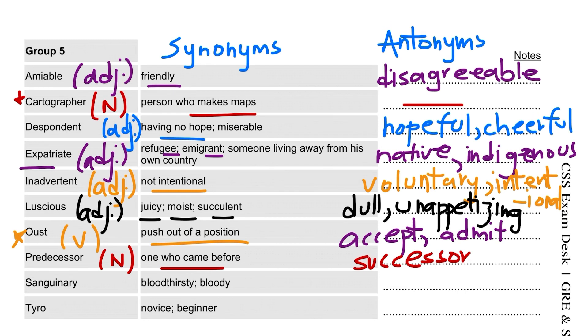Then we have sanguinary. This is an adjective and it is archaic language. It means bloody and bloodthirsty. Its antonym is peaceable.